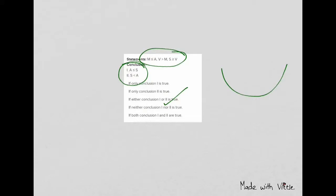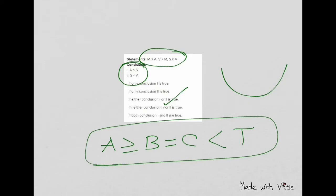This is very important because sometimes they can trick you and you should always read all the options. Nowadays question trends are also changing. What they can give you is sometimes they will give you A is greater than B equals to C less than T, and they will give you certain options where they will ask you which one is definitely wrong.